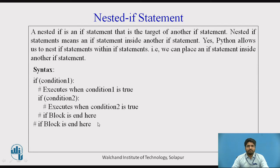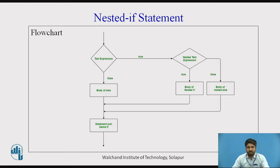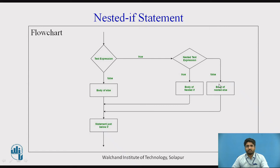We will understand more detail in the flowchart of nested if. Here the test expression — if false, it goes to the body of else. If true, then the nested test expression is checked, which may be true or false. If true, it goes inside the body of nested if; if false, it goes to the body of nested else. Then the next statement below if is executed.